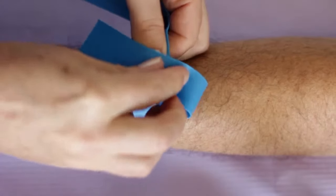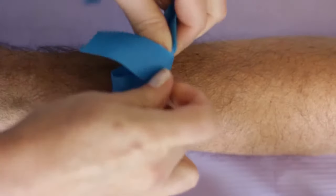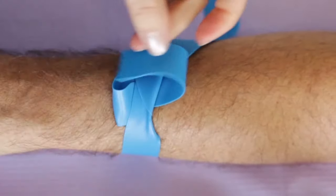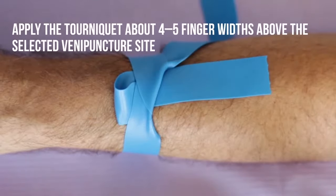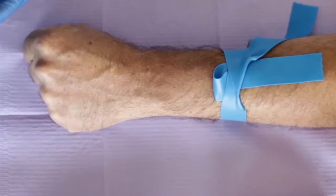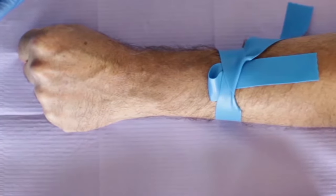When ready to draw the blood, apply the tourniquet about 4 to 5 finger widths above the selected venipuncture site. Ask the patient to form a fist to make the veins more prominent.